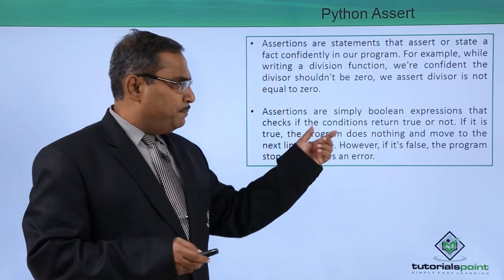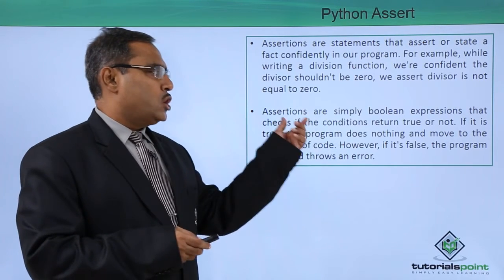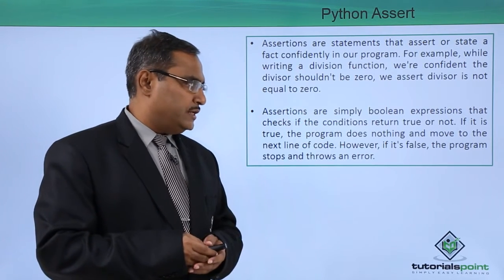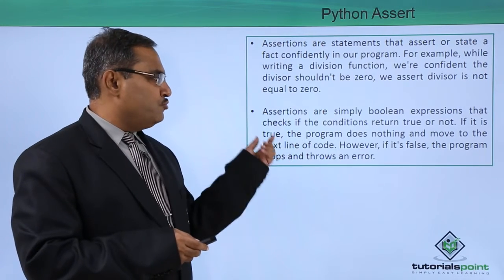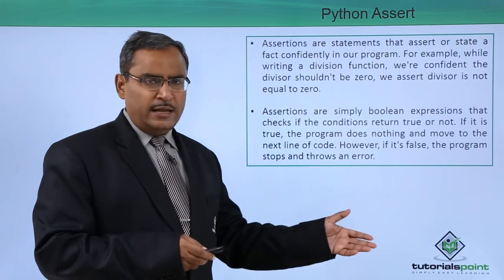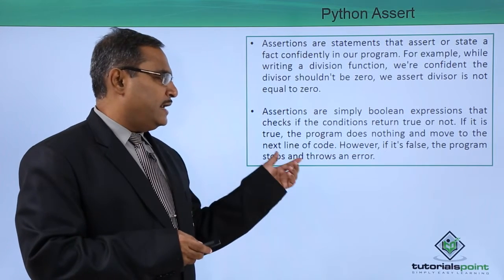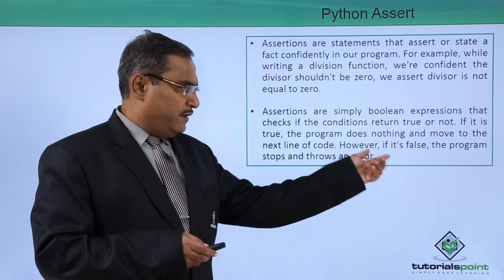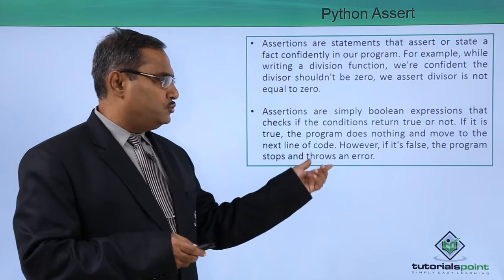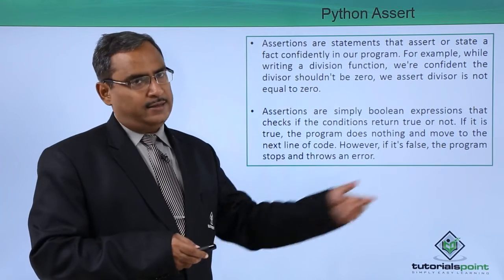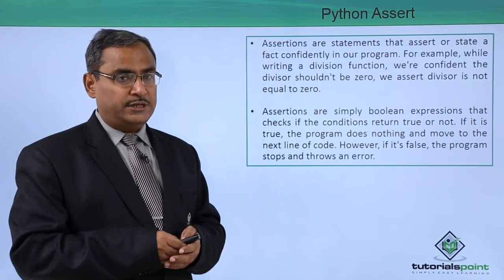Assertions are simply Boolean expressions that check if the condition returns true or not. If it is true, the program does nothing and moves to the next line of code. However, if it is false, the program stops and throws an error. That is the basic principle of assertion.